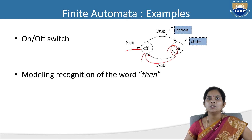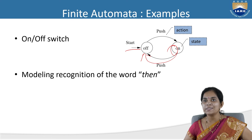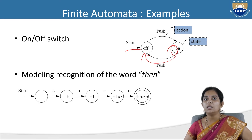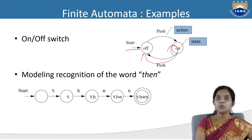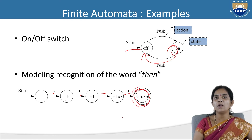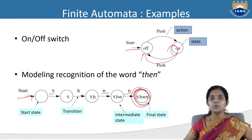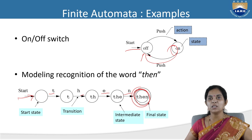Another example is modeling recognition of the word 'then'. Previously we discussed C programs containing strings. In the diagram, we initiate the start state with a circle, then give inputs T, H, E, N sequentially. The double circle represents the final state, the single circle is the initial state, the arrow marks are transitions, and the intermediate circles are intermediate states.